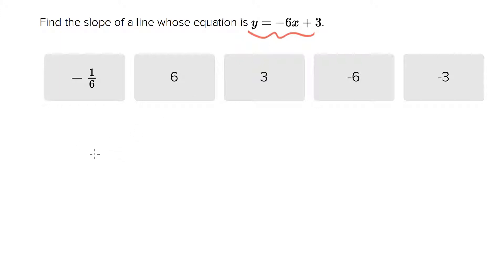This line is already in mx plus b form. Right, if you put a line in this format, you can read the slope right here. It's whatever the m term is, that is the slope.